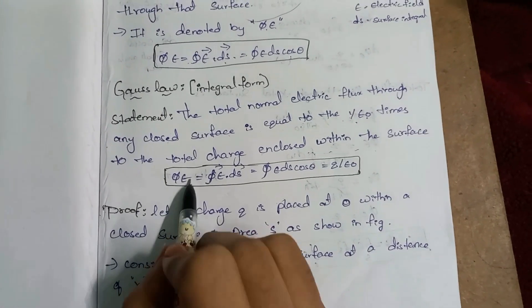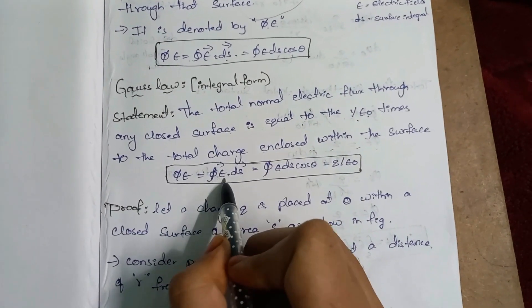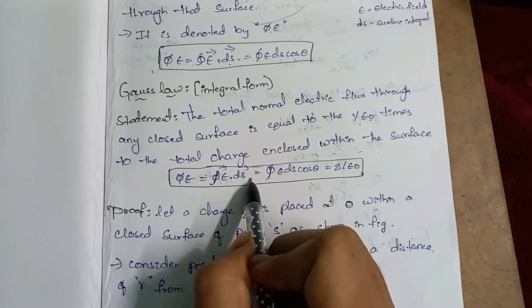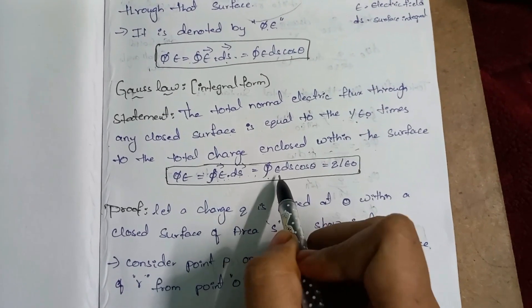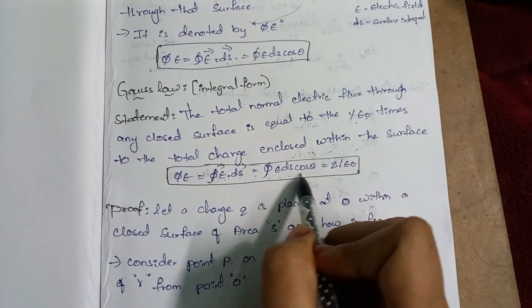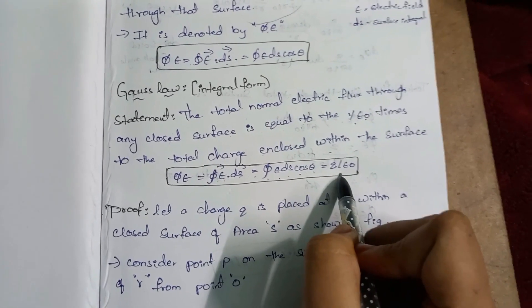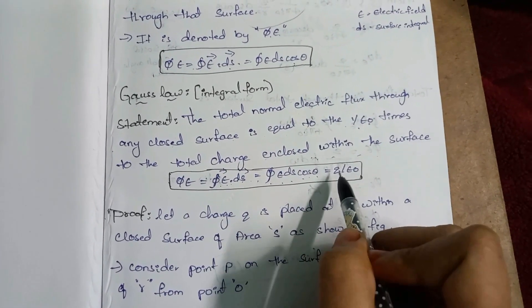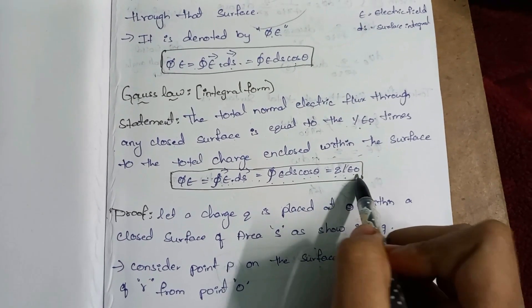Mathematically, φ = ∮E·ds = ∮E ds cosθ = Q/ε₀. If you have a charge Q enclosed, the total electric flux equals Q/ε₀.